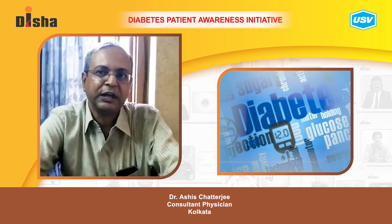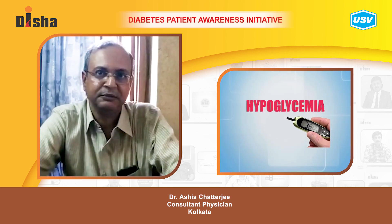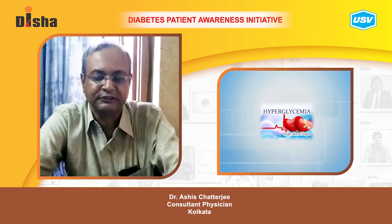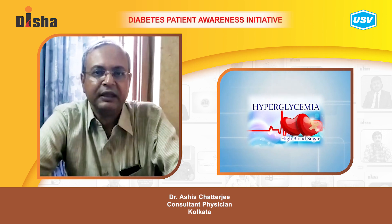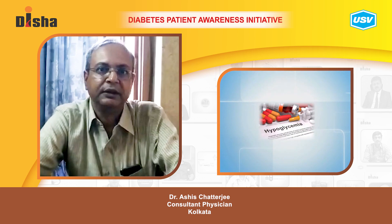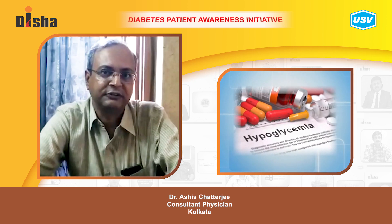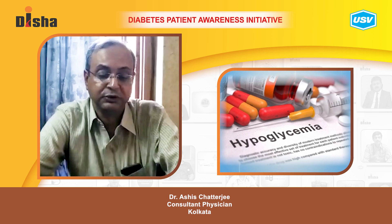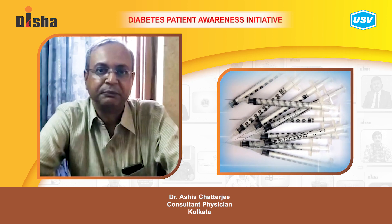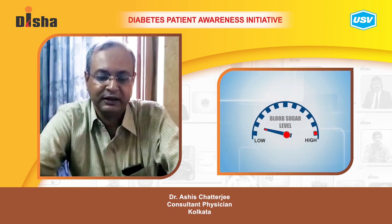There are actually two types of diabetic emergencies. One is hypoglycemia and another therapeutic emergency is hyperglycemia. In diabetic hypoglycemia, it is usually caused by excess of drugs, usually insulin or sulfonylureas, and the patient's sugar falls below 70 mg per dl.